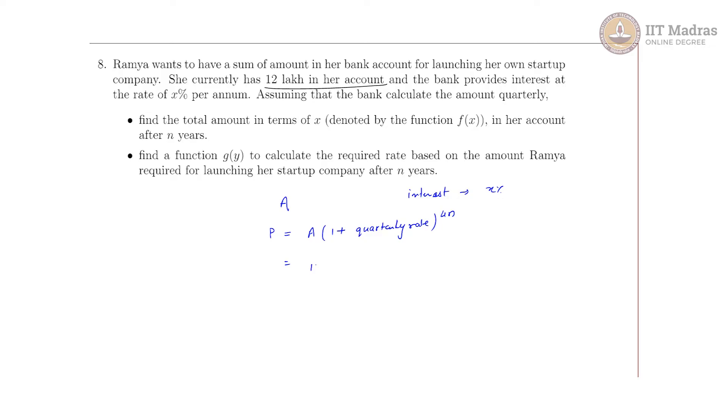So A is 12 lakh, then 1 plus the quarterly rate. Since x is per annum, divide by 4 and then 100, raised to 4n. So this is the amount in Ramya's account after n years if we calculate the interest quarterly. So this is represented by f(x). So f(x) = 12 lakh times (1 + x/400)^(4n). This is f(x).